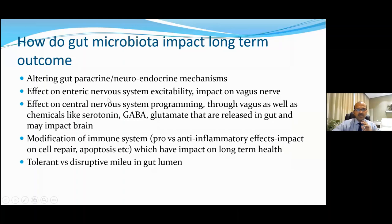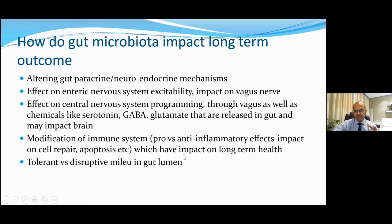These feedback mechanisms occur through the enteric nervous system excitability as well as the vagus nerve, which innervates the intestine and the autonomic nervous system — impacting the heart, blood pressure, and so on. The vagus also has afferents going into the brain stem. There is an effect on central nervous system programming through the vagus and locally produced neurotransmitters, and a modification of the immune system through the balance of pro- and anti-inflammatory effects, impacting cell repair and apoptosis.